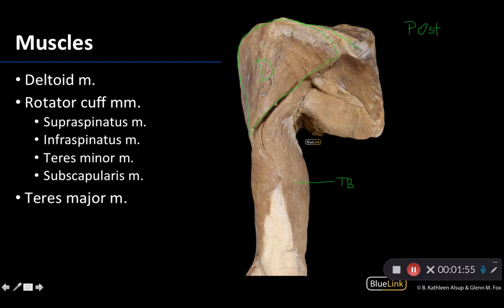The deltoid has its proximal attachments on the lateral clavicle, which you can't see here — we'll see that in an anterior view — as well as the acromion and the spine of the scapula, which you can see here. The distal attachment is on the deltoid tuberosity of the humerus, on that lateral portion of the shaft, right about here.